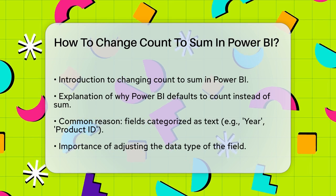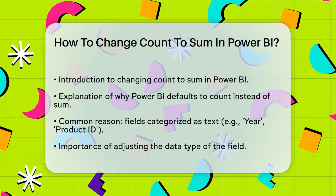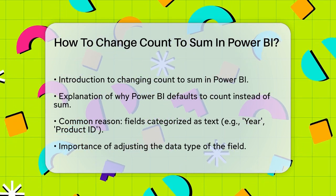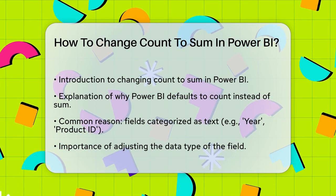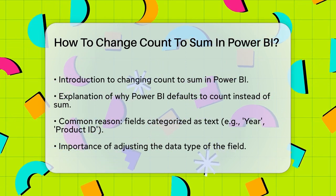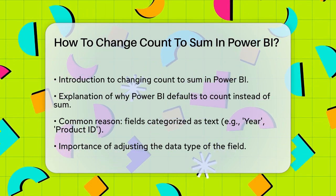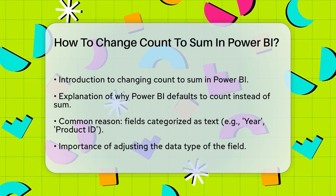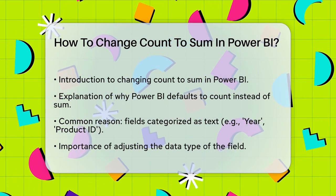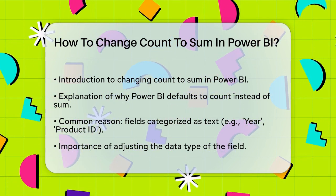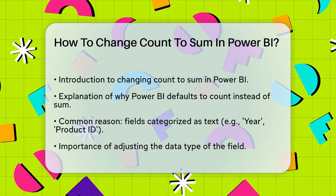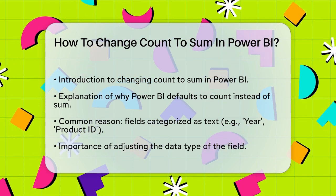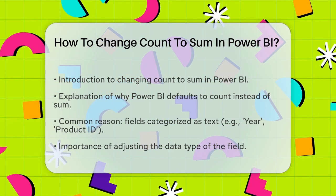First, you need to understand why Power BI might be defaulting to a count instead of a sum. This often happens because the field you're working with is not classified as a numeric field. For example, if a field like year or product ID is categorized as text, Power BI won't let you sum or average it — it will only count it. To change this, you need to adjust the data type of the field.